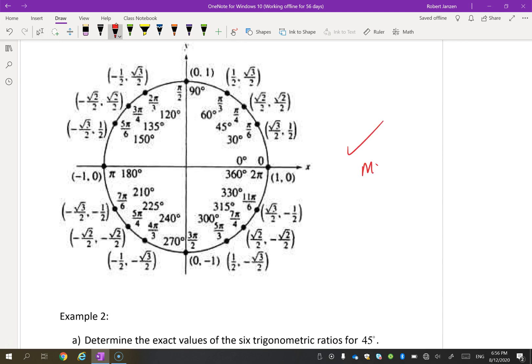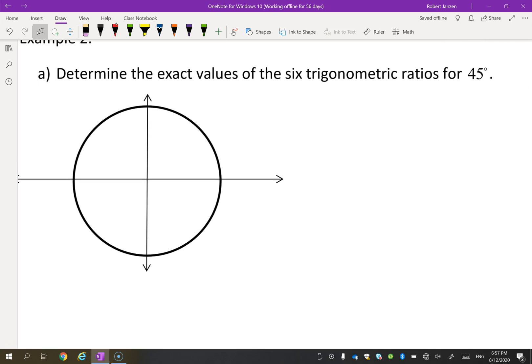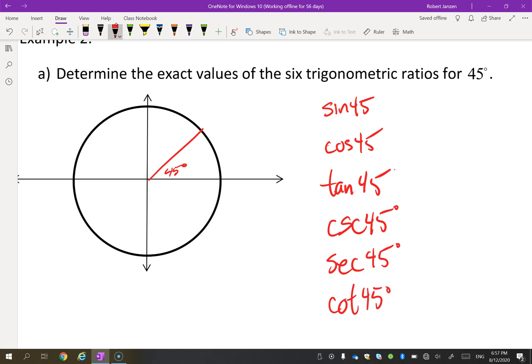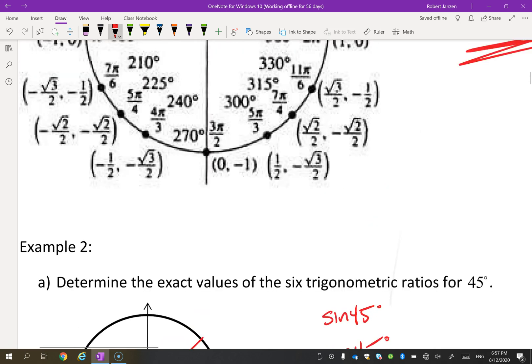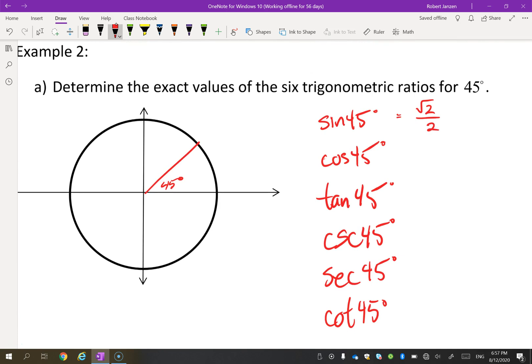So let's try a question. This you have memorized. If you don't have it memorized, you need to because the next two units, we're going to use those every single lesson. So determine the exact values of the six trig ratios for 45 degrees. So what we're looking for here is sine of 45, cos of 45, tan of 45, and then the reciprocal identities. Cosecant, secant, and cotangent. And we're supposed to know those. Those are ones that we've memorized. What is sine of 45 degrees? Well, here it is right here. Sine is root 2 over 2.